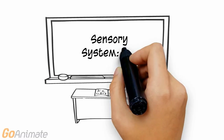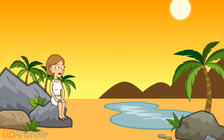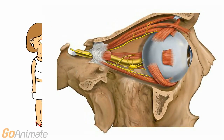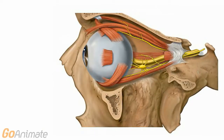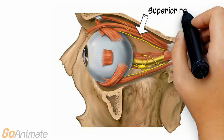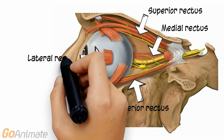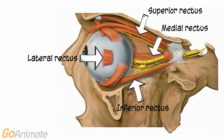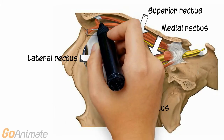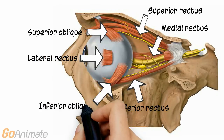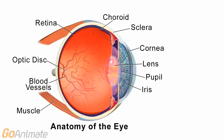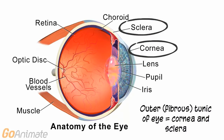Let's learn about the eye. Our eyes allow us to see the beauty of the world around us. There are six eye muscles, including the superior rectus, inferior rectus, medial rectus, and lateral rectus, which is cut in this picture. There is also a superior oblique and inferior oblique.